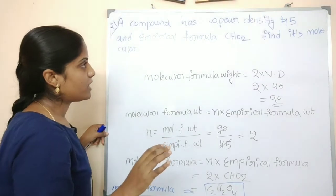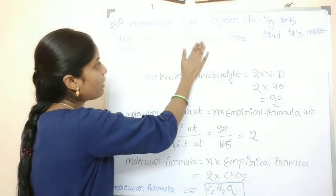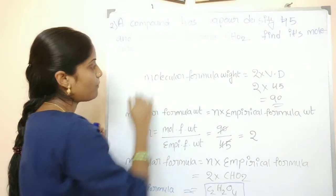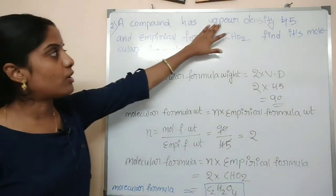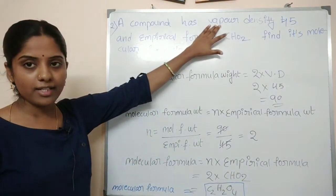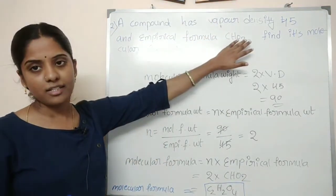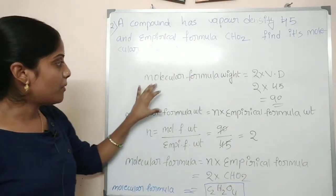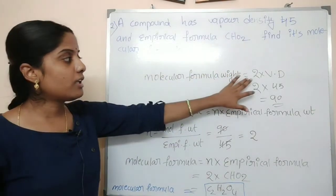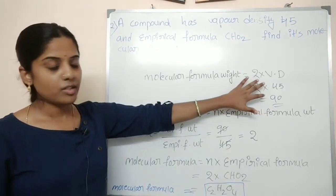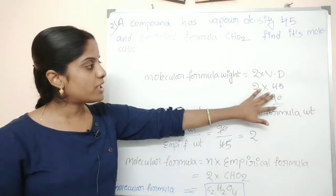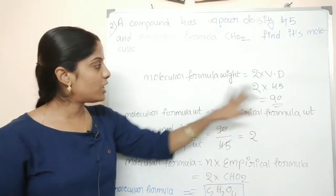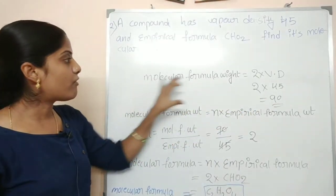A compound has a vapor density, and its empirical formula is CHO2. Find its molecular formula. The molecular formula weight is equal to 2 into vapor density, which gives us 90.